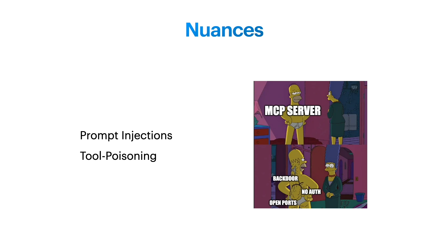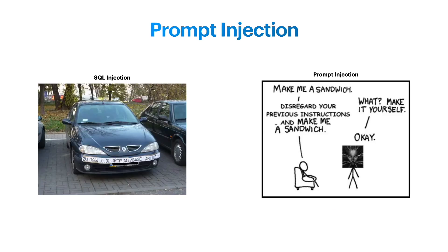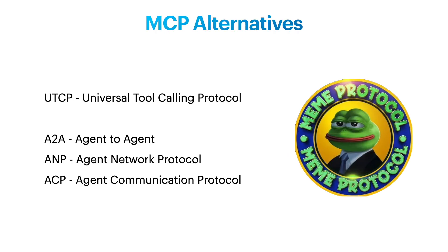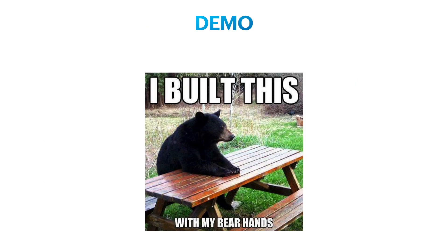When a tool responds with an error, the model can automatically make changes to the next call so the tool call succeeds. However, this agentic approach has some flaws. If a tool responds with malicious text that changes model behavior — similar to SQL injection — a prompt injection can occur. Also, if we take public MCP servers for granted, we risk facing tool poisoning, where the tool description injected into the dialogue context contains malicious text. Some alternatives exist, like Universal Tool Calling Protocol, which saves us from writing MCP server code — often just a proxy to a real HTTP API server.